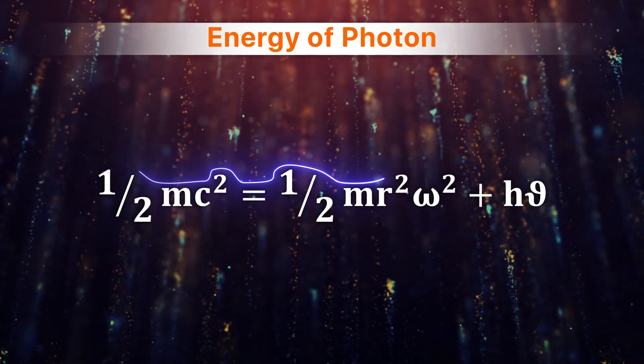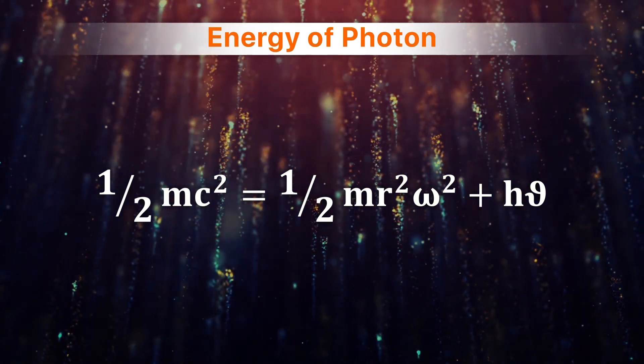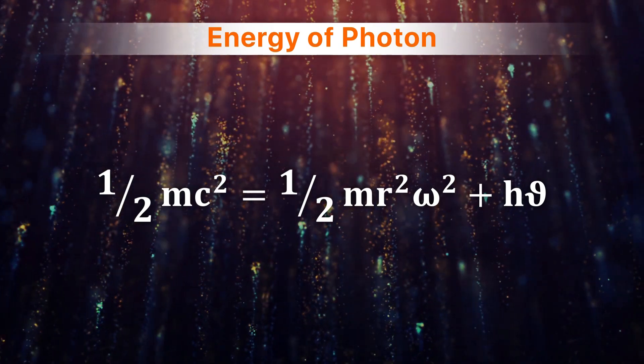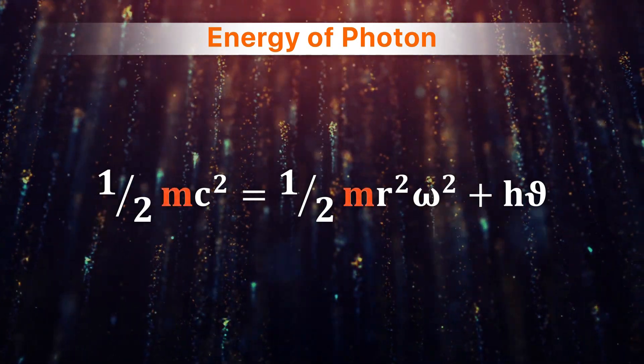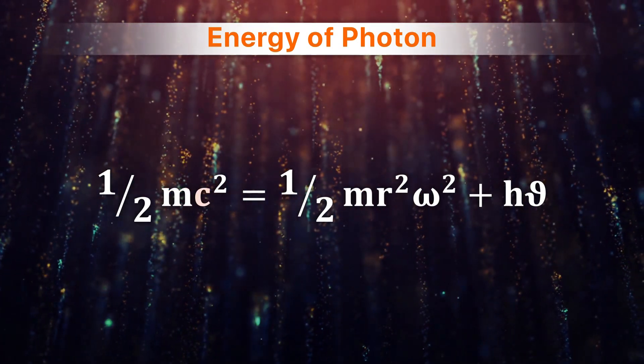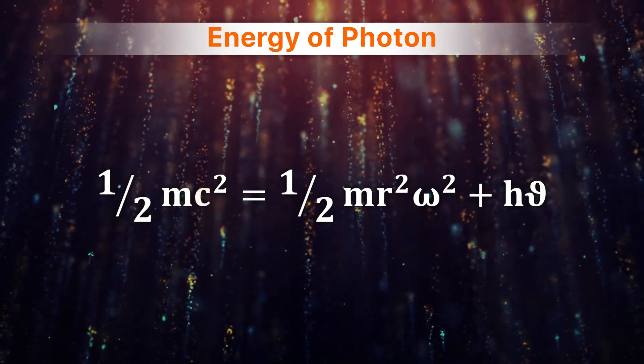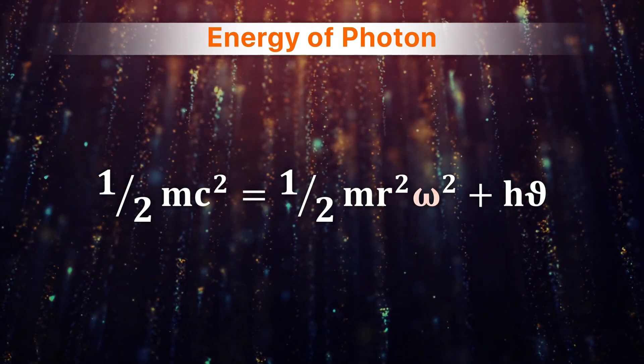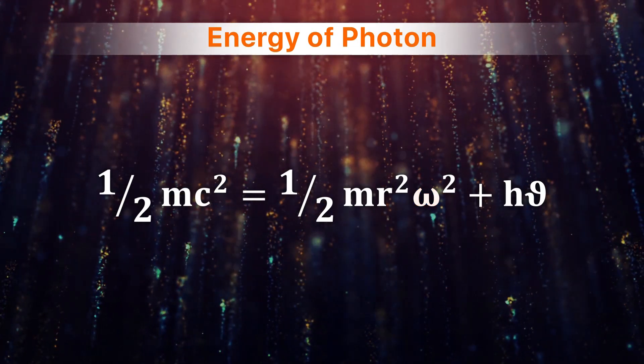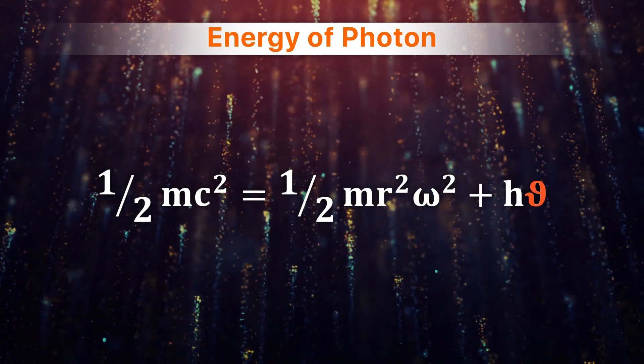In fact, this equation is always valid and all parameters are based on the properties of a photon, including mass, velocity, rotation radius, angular velocity, and frequency of photon.